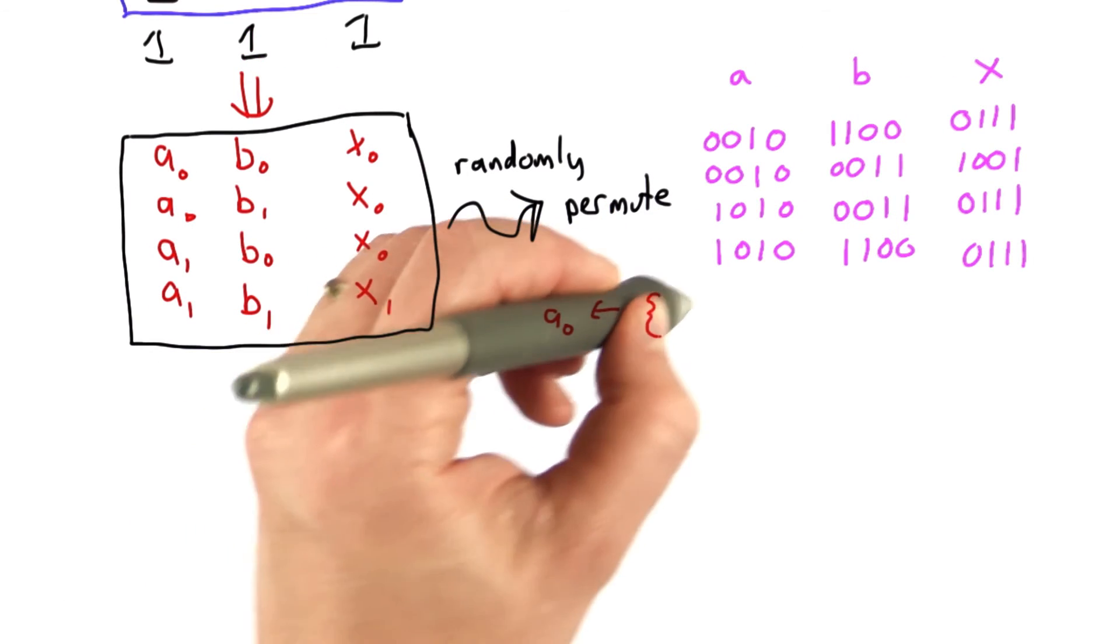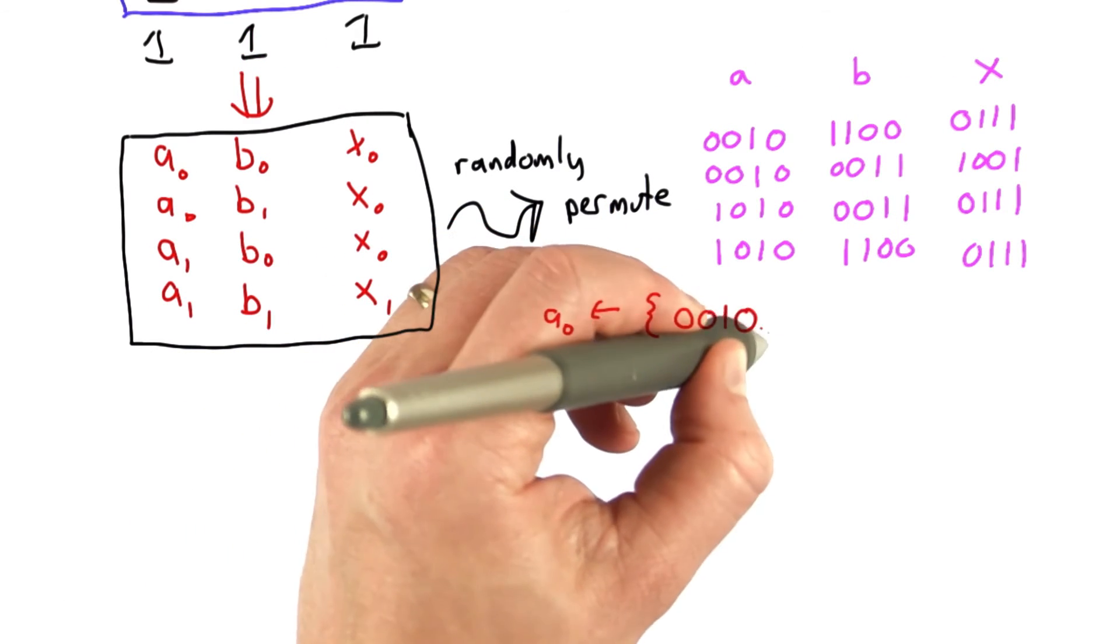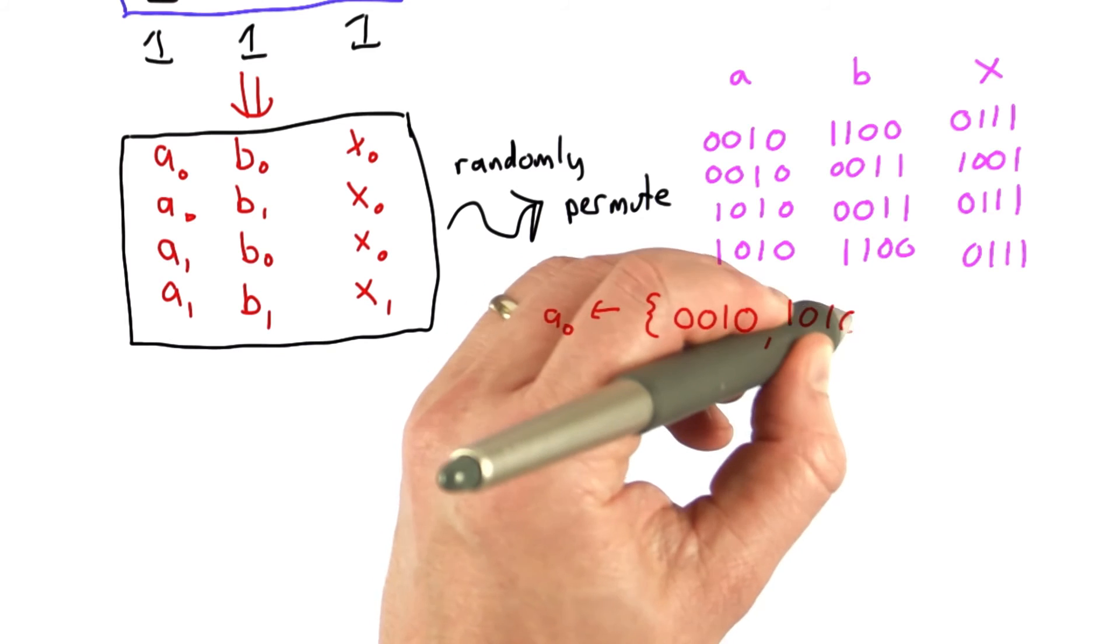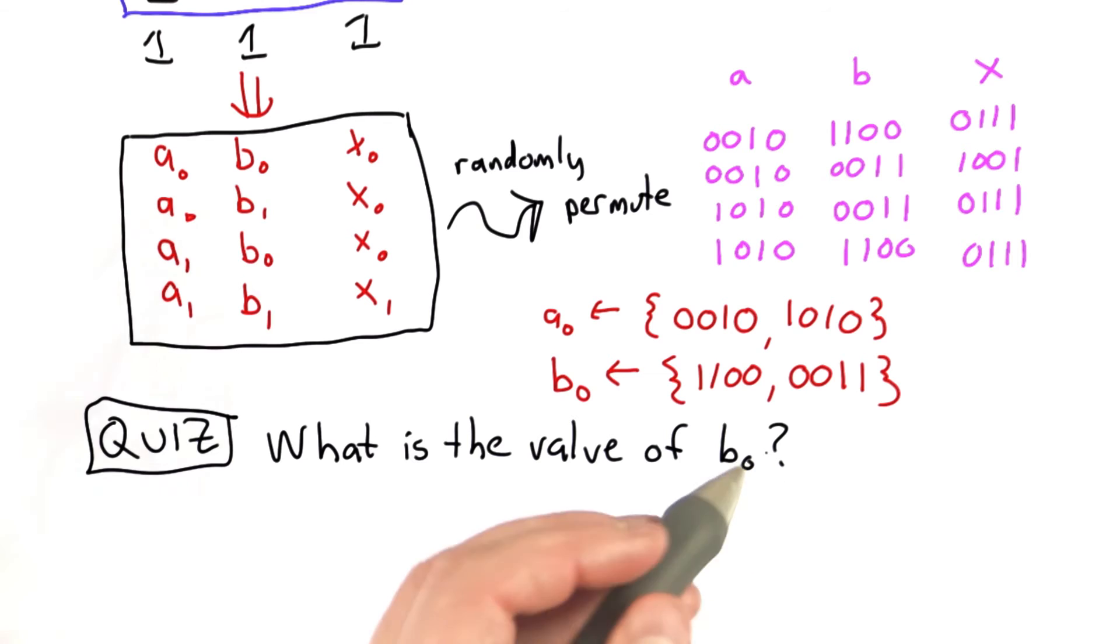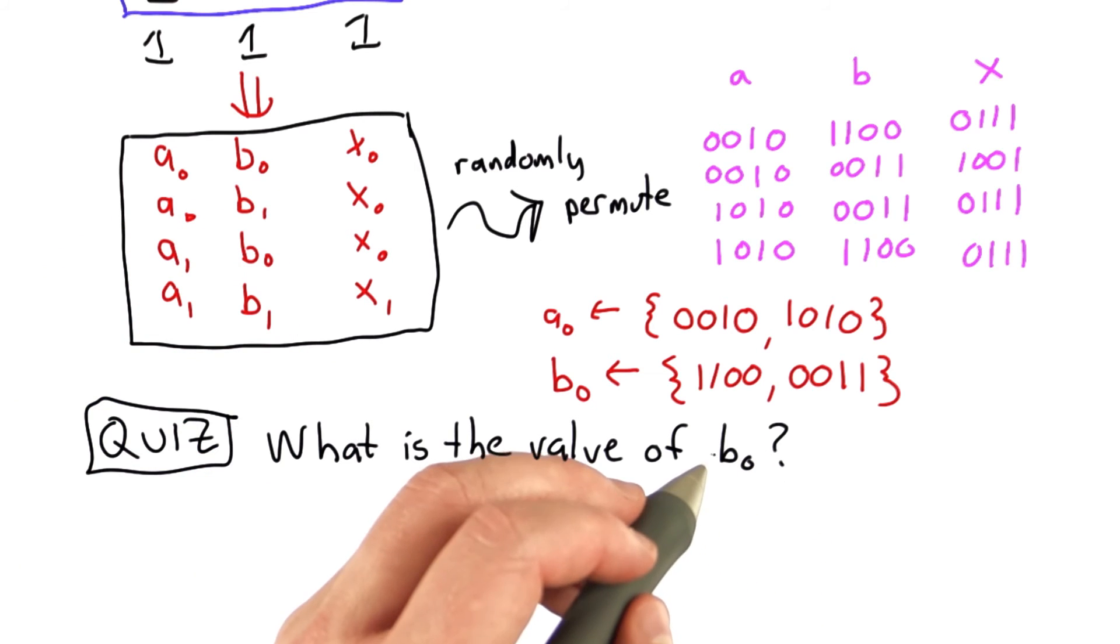That means that A0 is either 0010 or 1010. So now the question is, can you determine what is the value of B0? If you could, well, that would mean you know the semantic value of B. You can tell if it's equal to B0 or not.